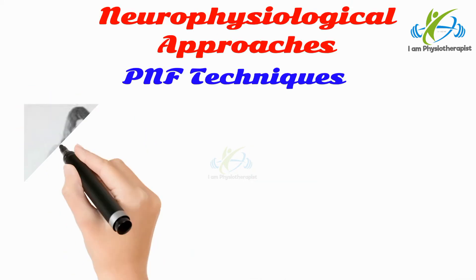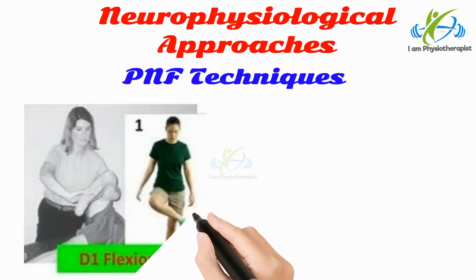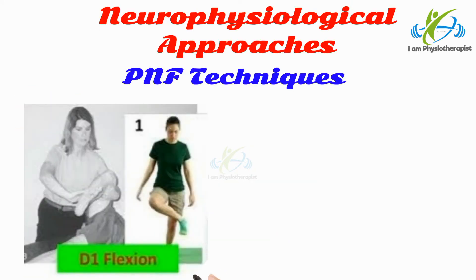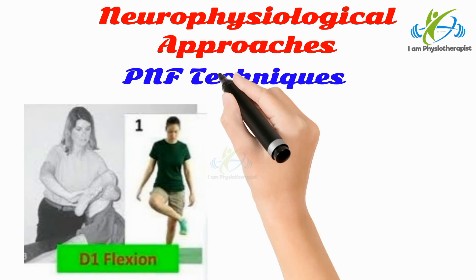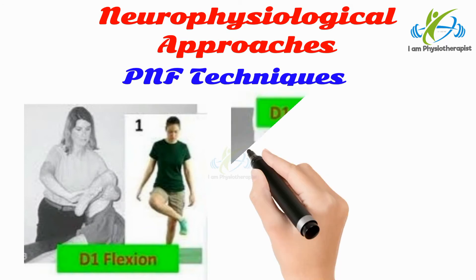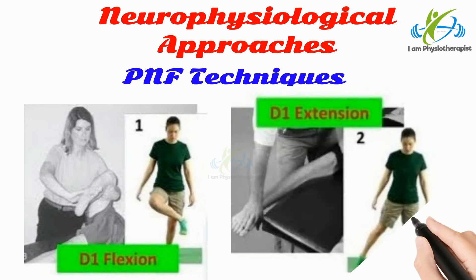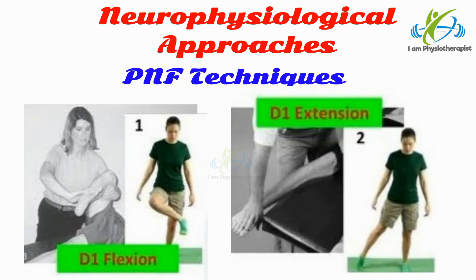For lower limb, D1 flexion includes hip flexion, adduction and external rotation, ankle dorsiflexion and inversion, and toes extension. D1 extension includes hip extension, abduction and internal rotation, foot plantar flexion and eversion, and toes flexion.